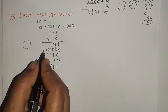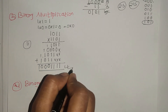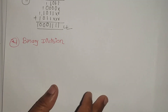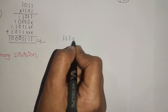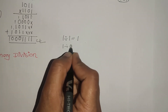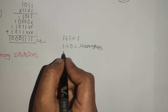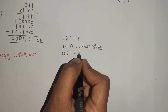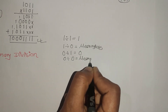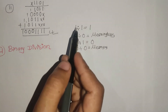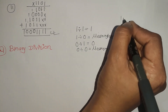Then binary division. 1 divided by 1 is 1. 1 divided by 0 is meaningless. 0 divided by 1 is equal to 0. 0 divided by 0 is meaningless.